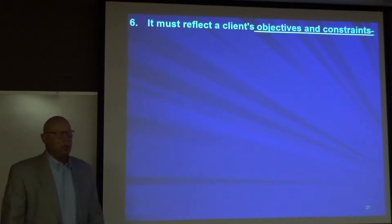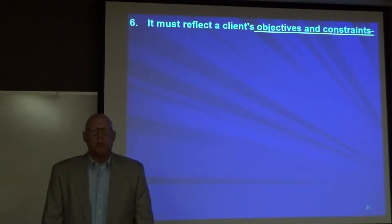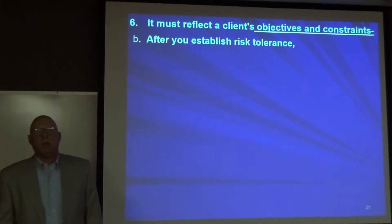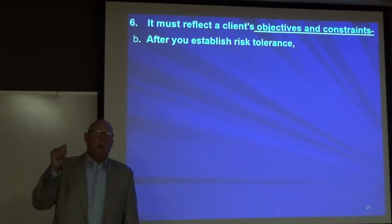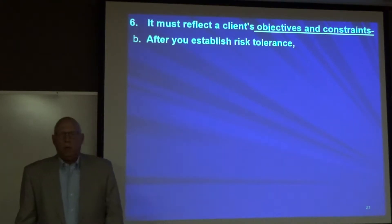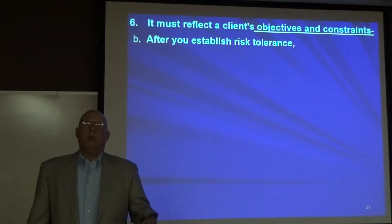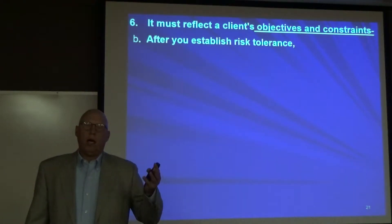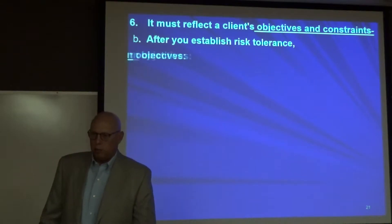We're looking at objectives and constraints, and we talked about risk tolerance. Now let's look at returns. First you establish their risk tolerance by looking at their emotional makeup, their financial circumstances, and their investment time horizon. Once you know what they're able to tolerate in terms of risk, then we can start looking at returns from the asset classes.